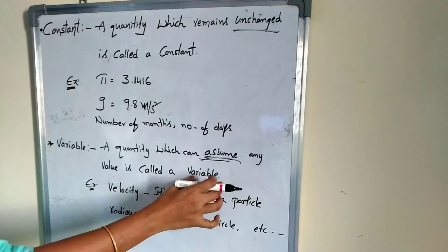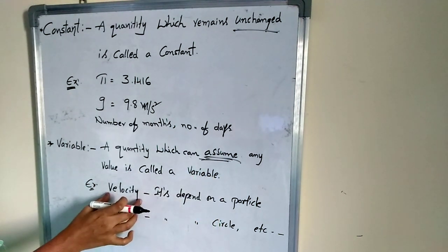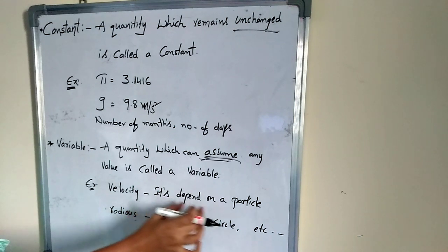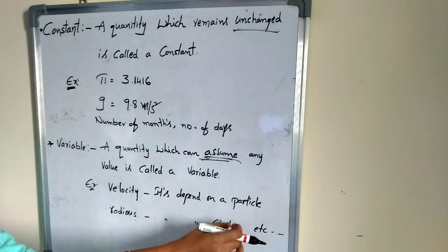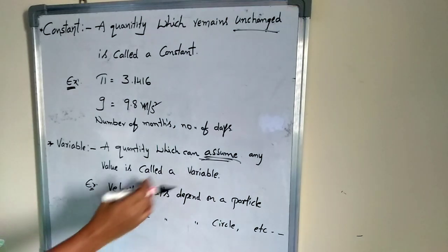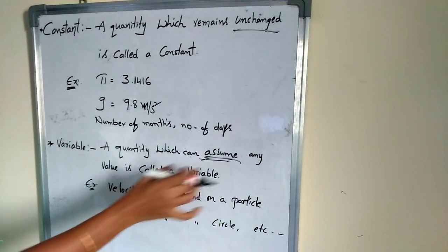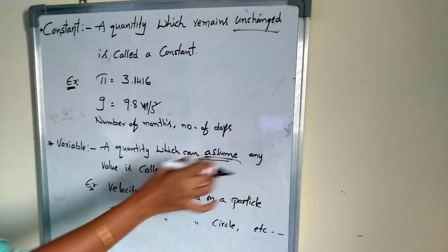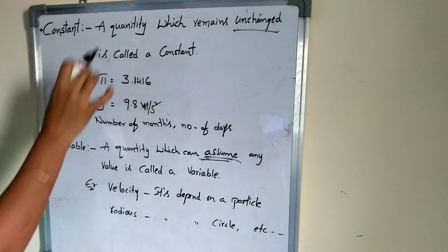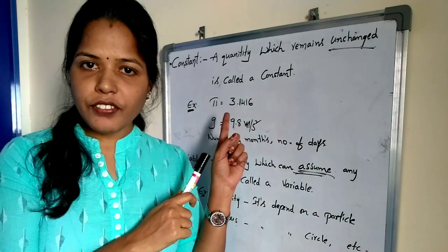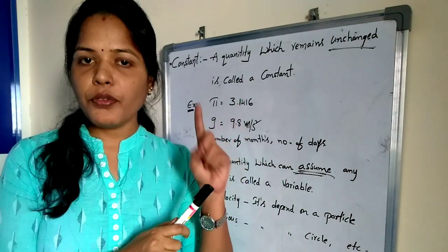For example, velocity - it depends on a particle. Radius - it depends on a circle. So this is a variable. We can assume any value is called variable. Unchanged value is called a constant.